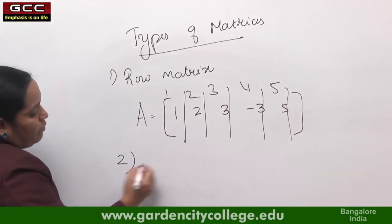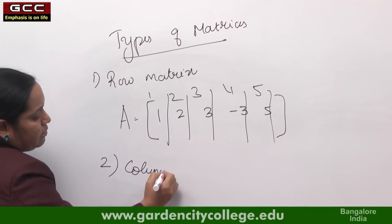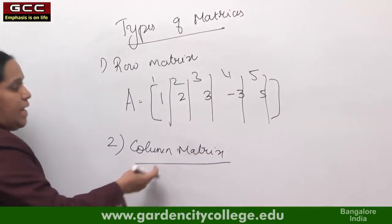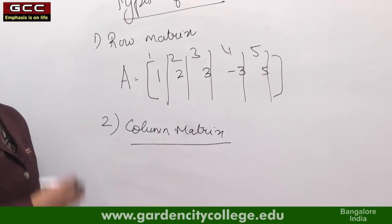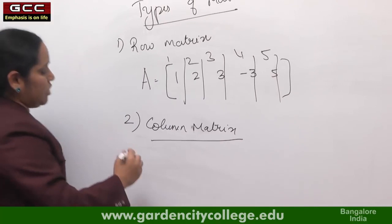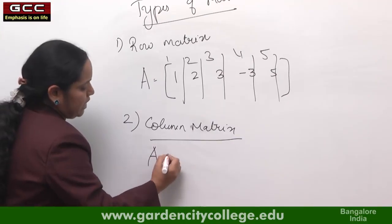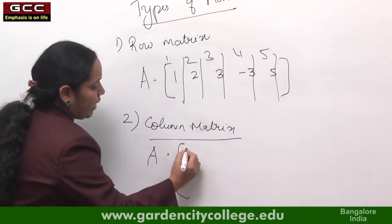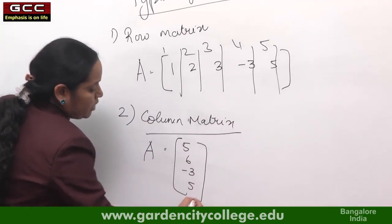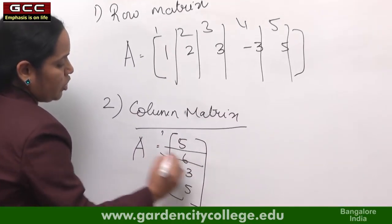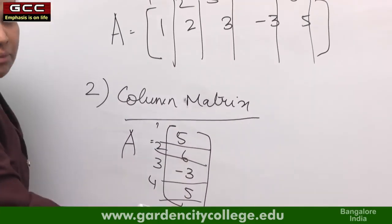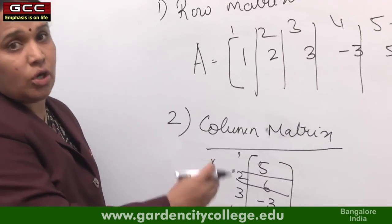The second type is a column matrix. A column matrix is a matrix which has only 1 column and any number of rows. For example, A = [5; 6; -3; 5]. This matrix has 4 rows but only 1 column. Such a matrix is called a column matrix.